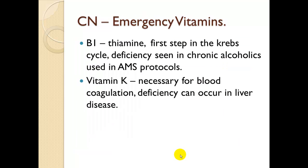Clinical note: emergency vitamins. B1 or thiamine is required for the first steps in the Krebs cycle; deficiency can be seen in chronic alcoholics. The vitamin is generally utilized in cases of altered mental status, so anyone with a history of alcoholism being administered sugar should also be given thiamine. Vitamin K is necessary for blood coagulation; deficiencies can occur in liver disease, causing bleeding problems in patients with a dysfunctional liver.